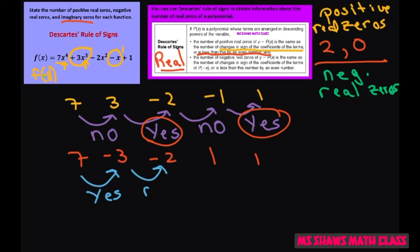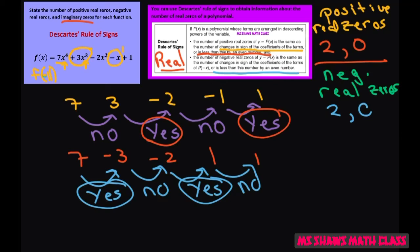This is not. This one is. And this one's not. So that means again we have 2 yeses. That means we have that or less than this number by an even number. So just subtract 2 and you get 0. Now let's infer our imaginary zeros.